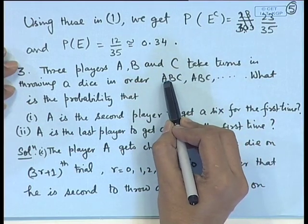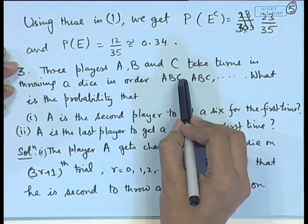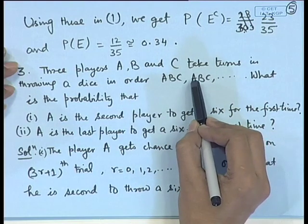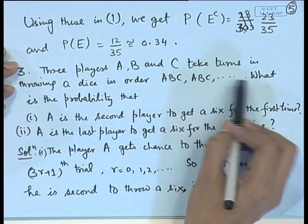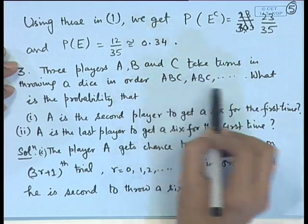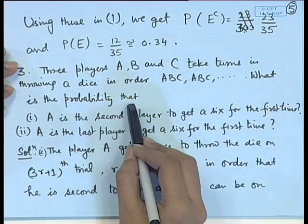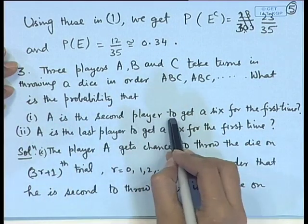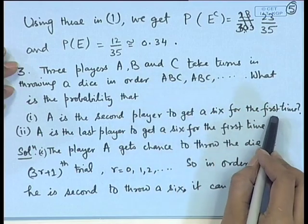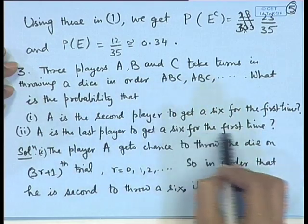Firstly player A throws the die, then player B, then player C, then player A again, and so on. We want to find the probability that A is the second player to get a 6 for the first time, or that A is the last player to get a 6 for the first time.